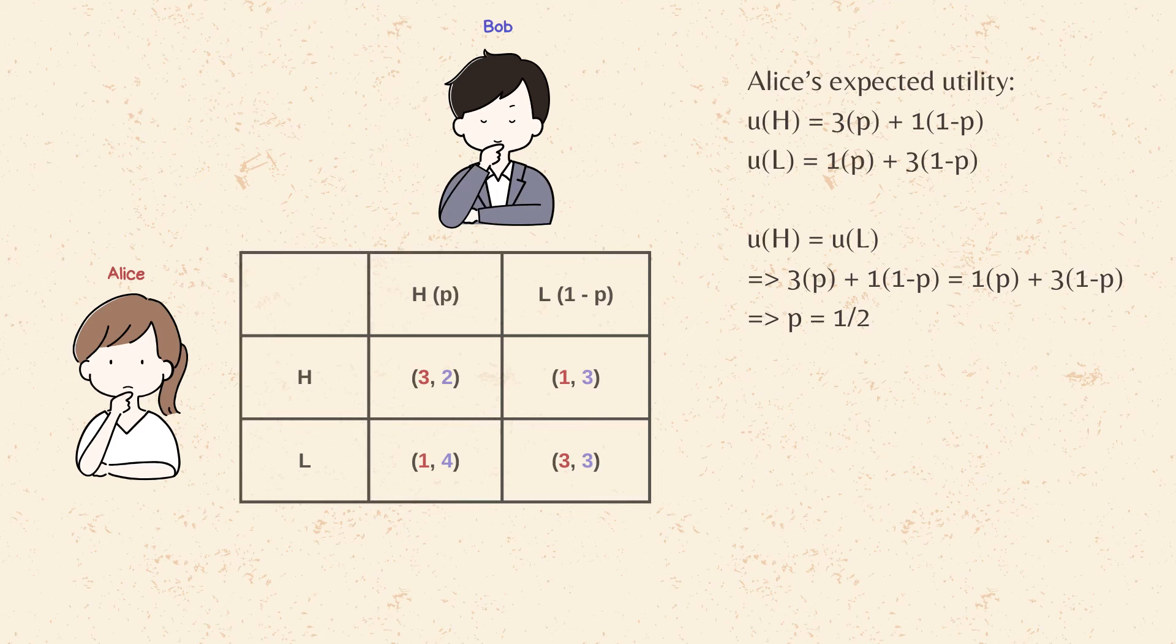After we equalize the utility of high bid and low bid, we get P equals to half.